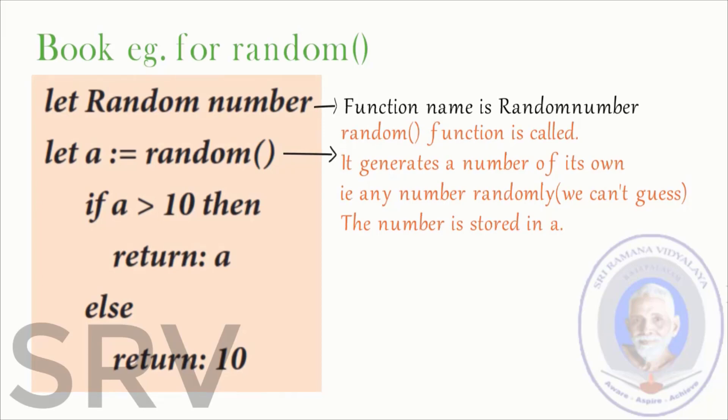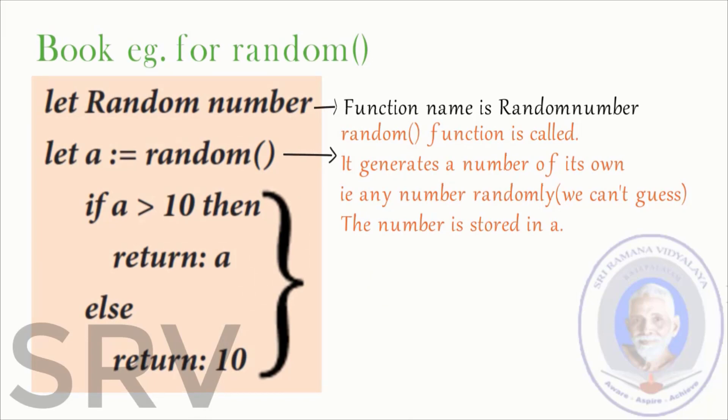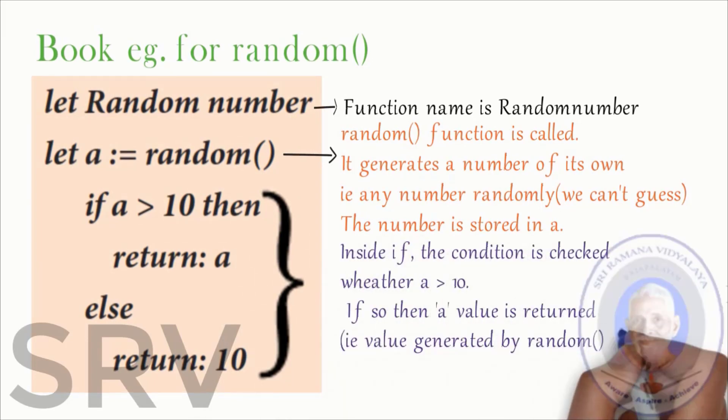The number is stored in a. Next, goes to the if condition. Inside if the condition is checked whether a is greater than 10. If so, then a value is returned. That is value generated by random function is returned. Or else the value 10 is returned.